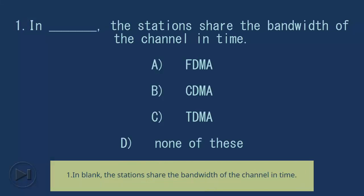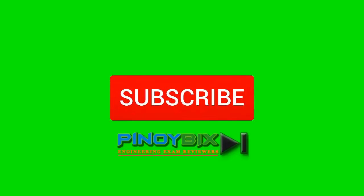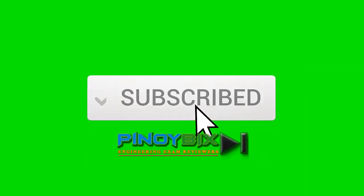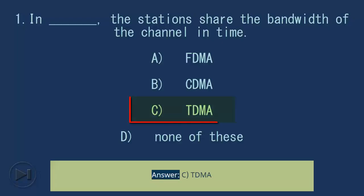Question 1: In blank, the stations share the bandwidth of the channel in time. A) FDMA, B) CDMA, C) TDMA, D) None of these. Answer: C) TDMA.